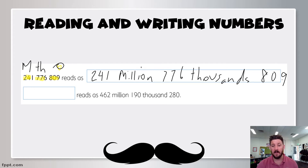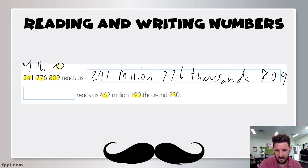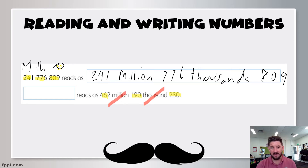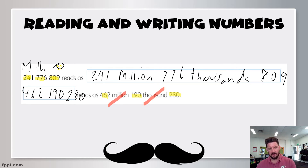The second part is we're going to work the opposite way — starting with how we'd say it: 462 million, 190,000, and then 280. All we need to do is work in groups of three. We've got these three numbers, these three, and then these three. That's really easy — all I have to do is take out the word million, take out the word thousand, and I have my answer right there. Four hundred and sixty-two, one hundred and ninety, and two hundred and eighty. So our number would be 462,190,280.